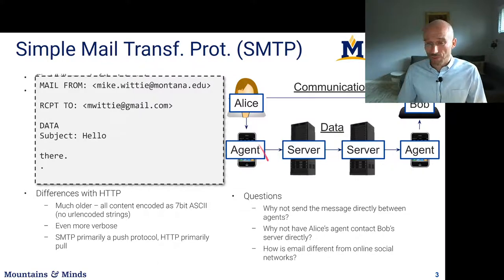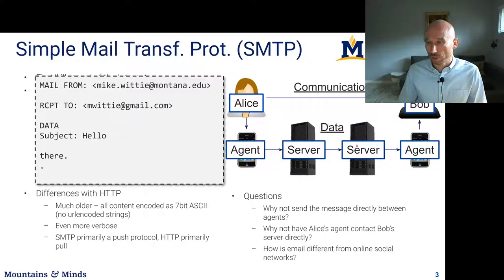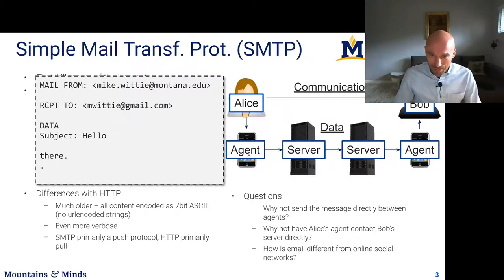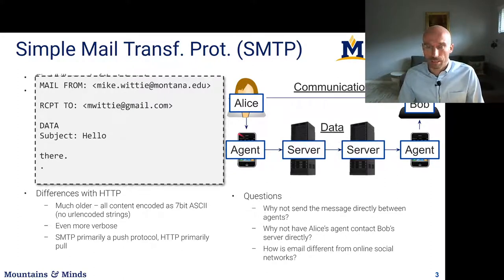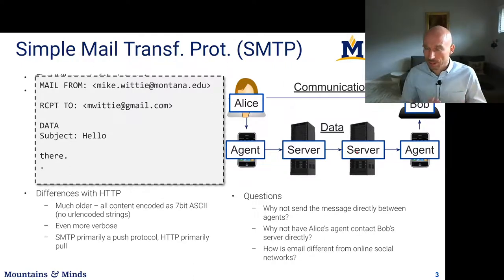You could send from Alice's agent directly to Bob's server, but then you don't know if Bob's server is online — the agent would have to keep retrying sends to Bob's server, waiting for it to come back online. What we want is for Alice to commit the email to her own server, and then that server — which is stable — can keep waiting for Bob's server to come online. Alice can log out, but her server will keep trying to send the email to Bob's server, making this asynchronous from both Alice and Bob's perspective.